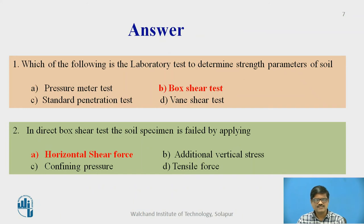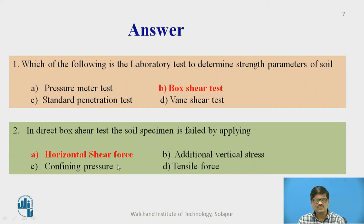Welcome back. The answer to the first question — which is the laboratory test to determine strength parameters of soil — is the box shear test. The remaining options are all field tests; only the box shear test is the laboratory test. The answer to the second question — in the direct box shear test, the soil specimen is failed by applying — is horizontal shear force. In the box shear test, we make the soil fail by applying horizontal shear force.